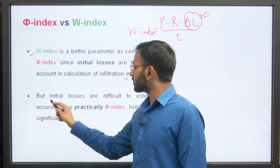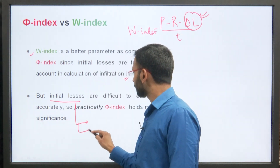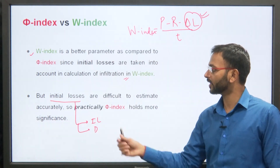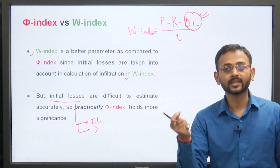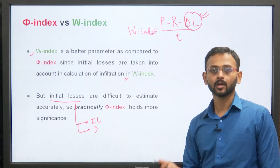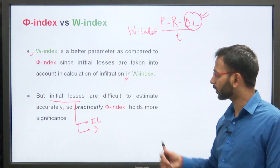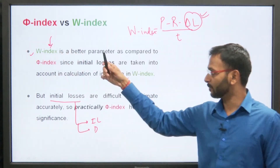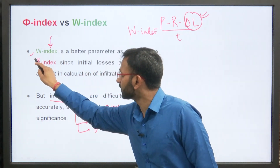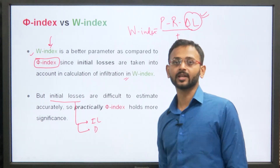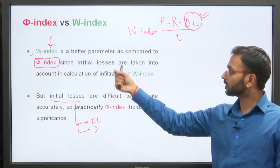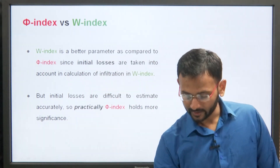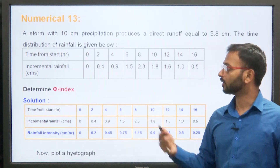However, initial losses — interception loss and depression losses — are practically very difficult to identify and estimate. Therefore, W-index is difficult to calculate. In contrast, phi index does not account for any losses, making it much easier to compute. So practically, phi index is a better and more commonly used indicator.